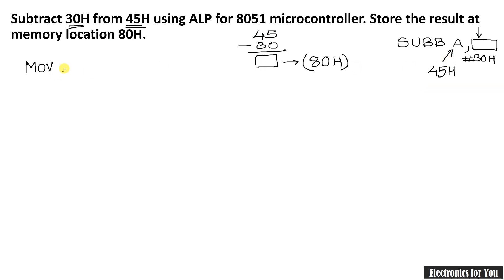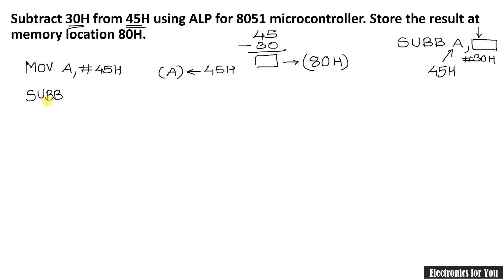We have to store 45H into the accumulator. Therefore, it is MOV A, comma hash 45H. It means that 45H is the data and it is stored into the accumulator. Next instruction is the sub-instruction, that is SUBB. Note that there is no SUB instruction only — it is SUBB. It is SUBB A, comma hash 30H because we have to subtract 30H from the accumulator.